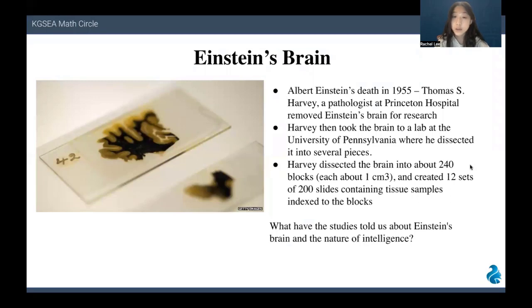Have you ever wondered what makes a genius a genius? When you think of a genius, most people may think of Albert Einstein. It's no surprise that after Albert Einstein's death in 1955, scientists all over the world scrambled for the opportunity to get a piece of his brain. His brain was saved by Dr. Thomas S. Harvey, a pathologist at Princeton Hospital, who removed Einstein's brain on the morning of Einstein's death. Harvey then took the brain to a lab at the University of Pennsylvania where he dissected it into several pieces. Harvey dissected the brain into about 240 blocks, each about 1 centimeter cubed, and created 12 sets of 200 slides containing tissue samples indexed to the blocks. What have the studies told us about Einstein's brain in relation to the nature of intelligence?